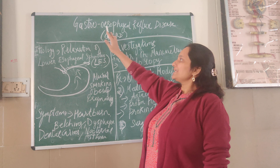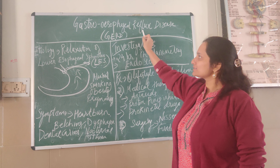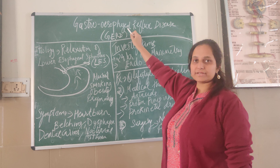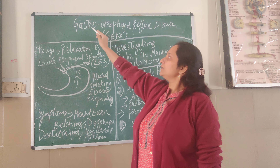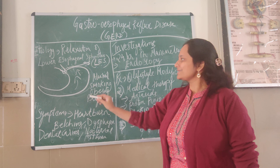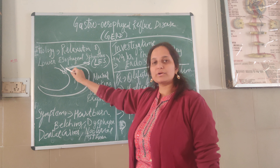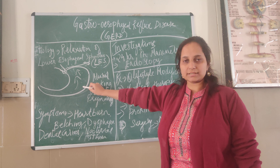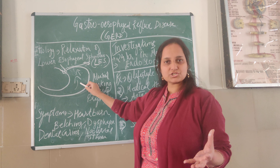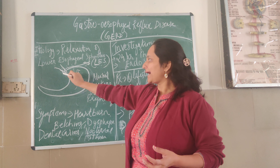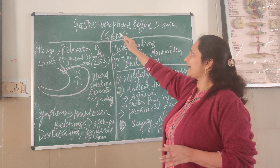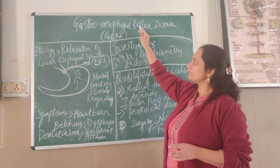As the name suggests, GERD is the reflux of acid from the stomach into the esophagus — a backflow of stomach acid into the esophagus. As you can see in this diagram, this is the lower end of the esophagus and this is the stomach. The stomach produces acid for digestion of food, and that backflow into the esophagus is GERD — gastroesophageal reflux disease.